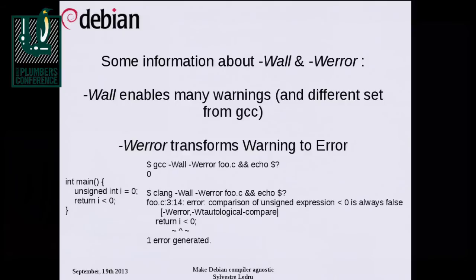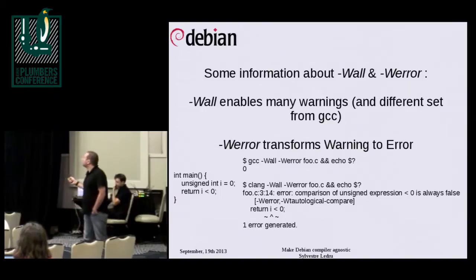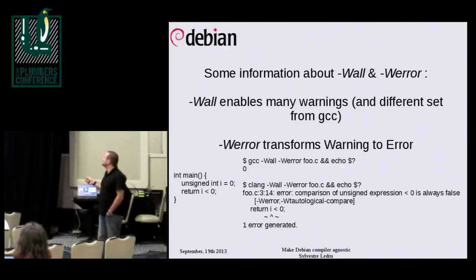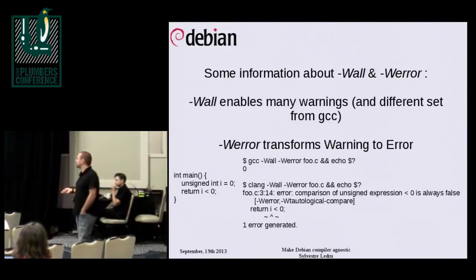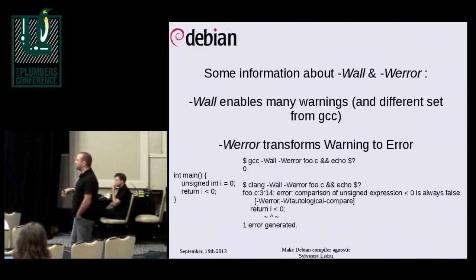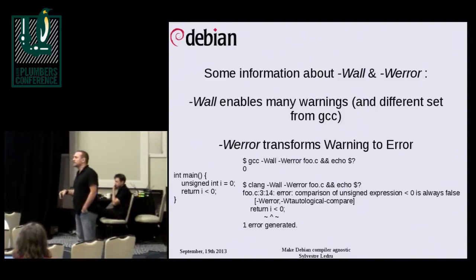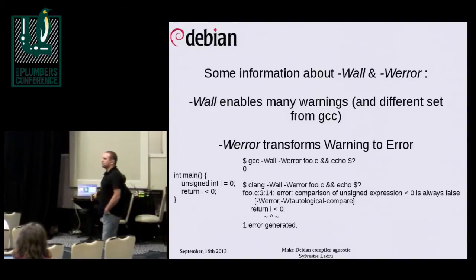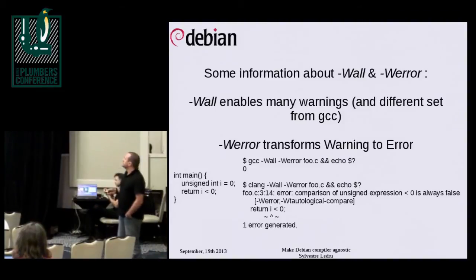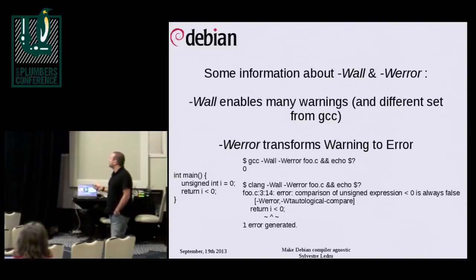The first major cause is using -Wall and -Werror together, which is a very bad idea. I think we should even forbid -Werror in Debian, because most of the time you develop with one compiler and forget there are other compilers in the world. If you use this option, it will fail on other compilers — which is exactly the case with Clang. A lot of build failures we're getting are because of this.